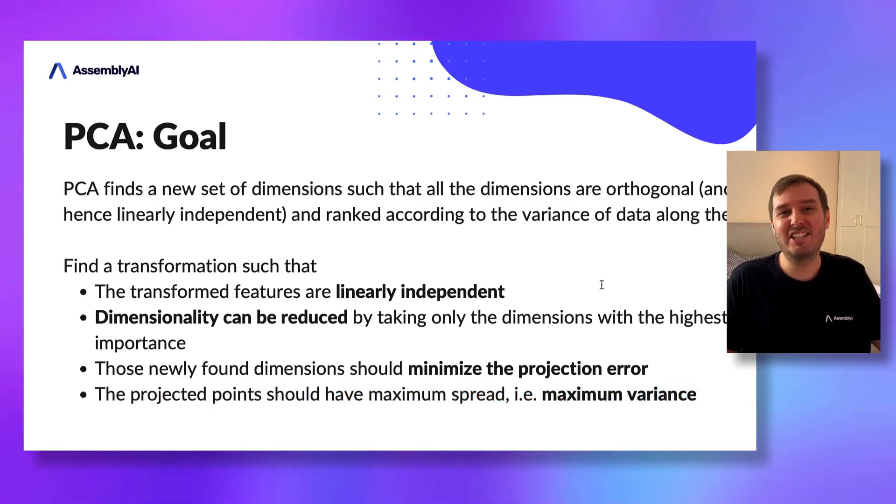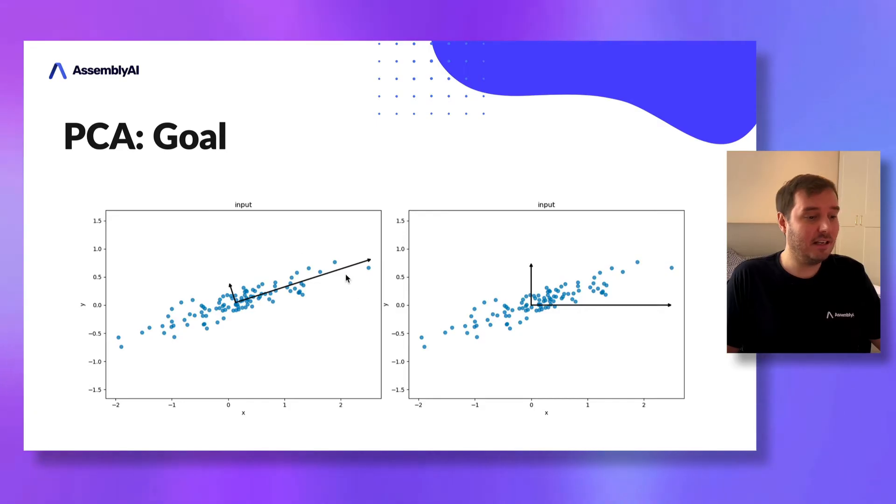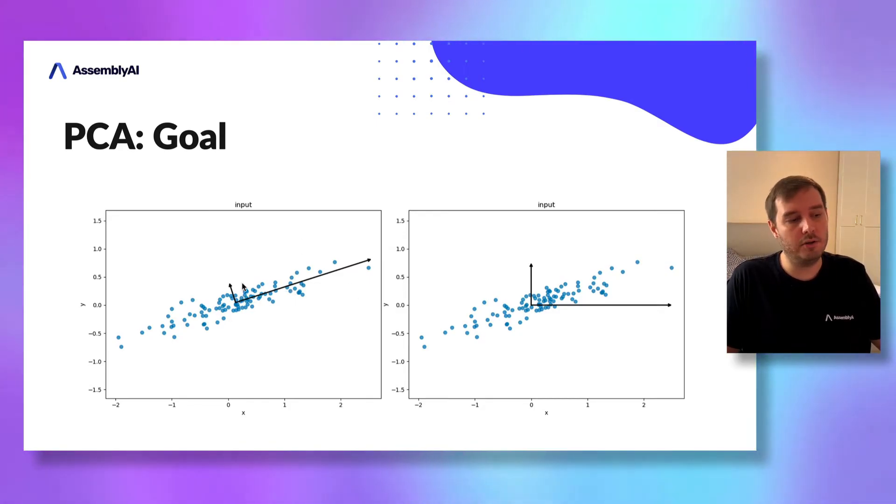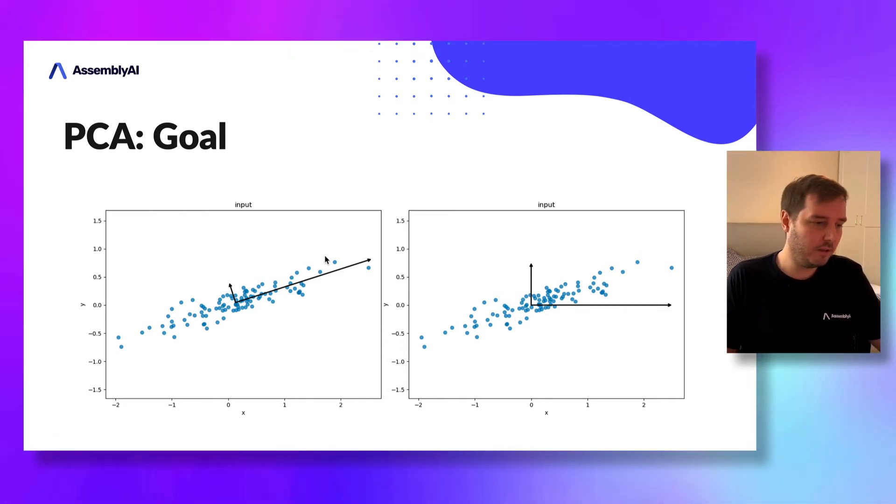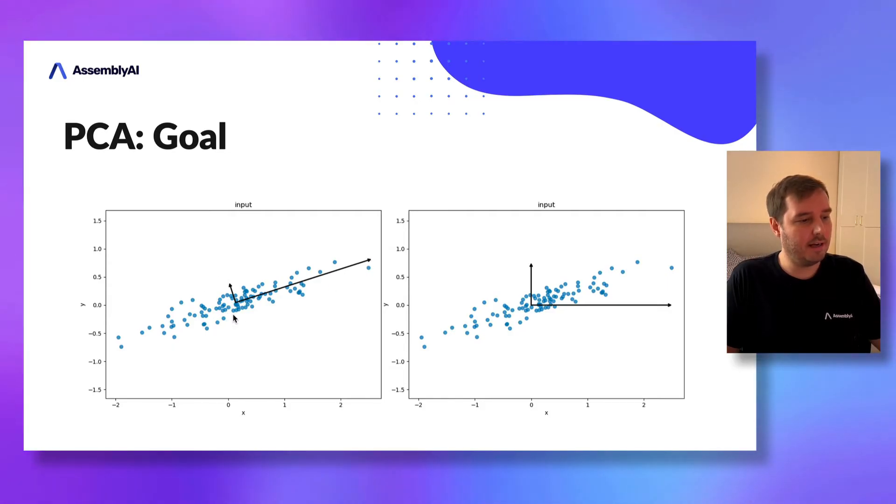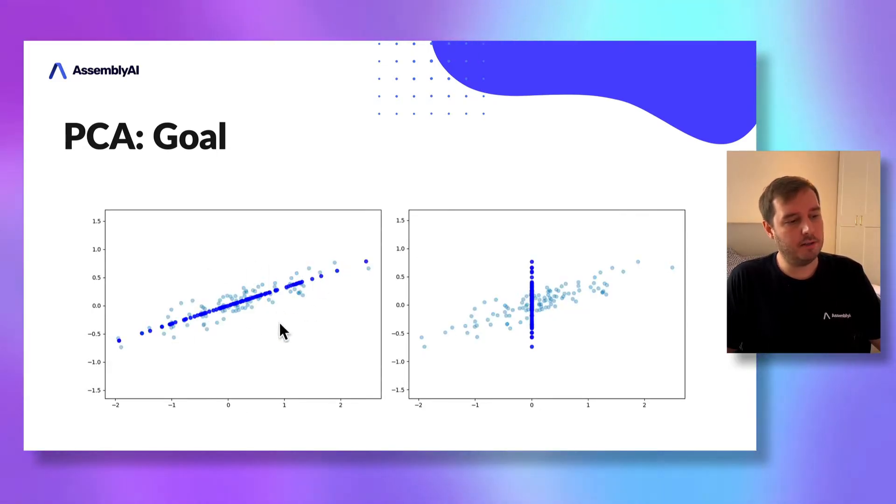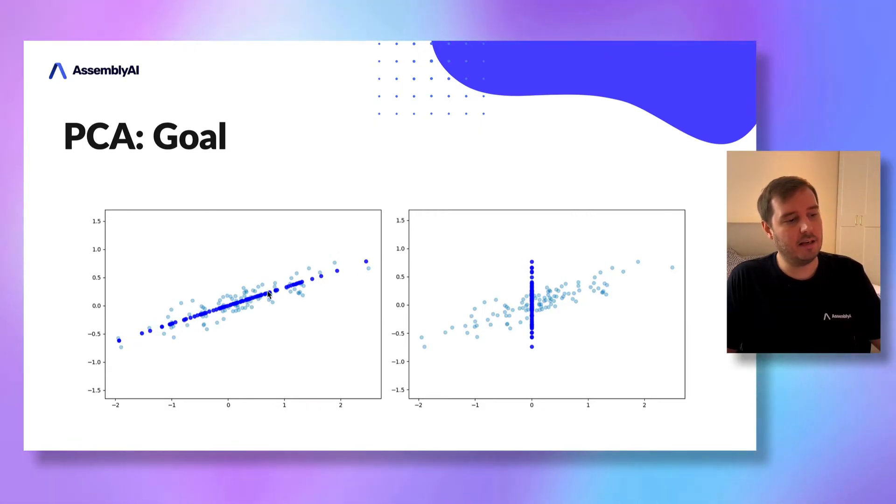This gets much clearer when we look at an example. In this case, we want to map the points from 2D into 1D, onto one line. On the left side, we have a good transformation—this is what PCA will do. On the right side, we have a bad transformation. Let's say we take these two new axes as our principal components. When we map the points onto the first axis, onto the first principal component, this is what we end up with. This is a good projection.